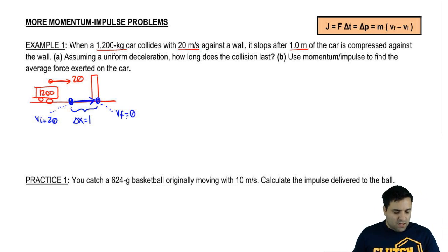So the first question is, assuming a uniform deceleration, so the deceleration is at the same pace, at the same rate, how long does the collision last? So we want to know what is the delta t here. So since we're talking about momentum and impulse, you might think immediately of this equation, and that's a good thing. But I'm going to show that that equation is actually not going to work.